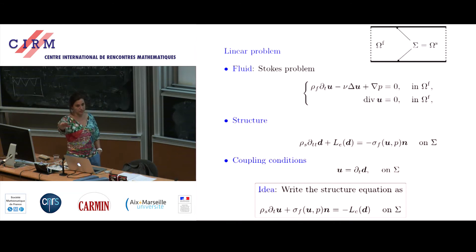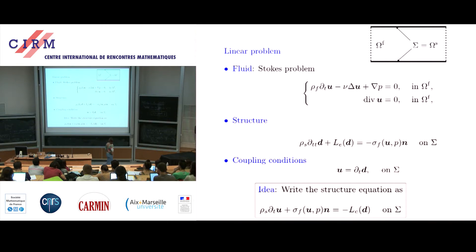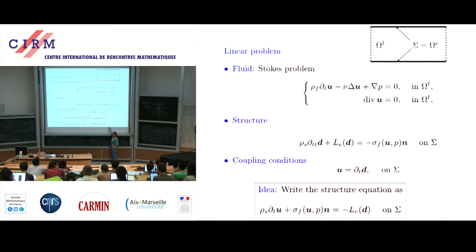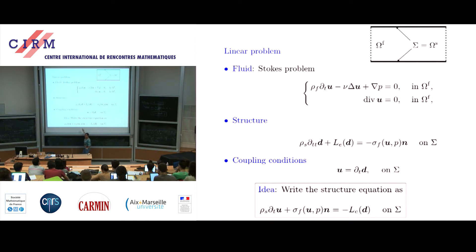Take a thin structure and a linear problem: the Stokes problem in a 2D domain coupled to the same structure as before. The coupling condition is equality of the velocity. The idea is to write the structure equation using the equality of the velocity and replacing the partial derivative of the displacement by u in the structure equation — giving this term.